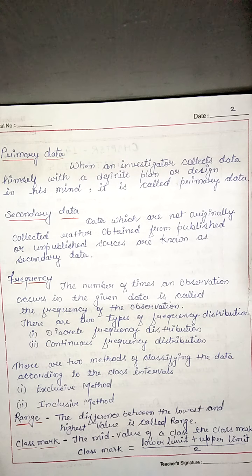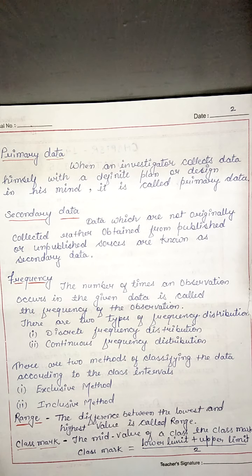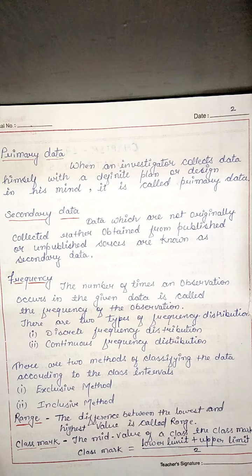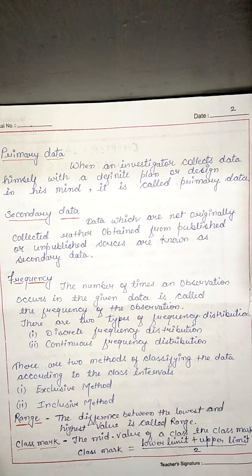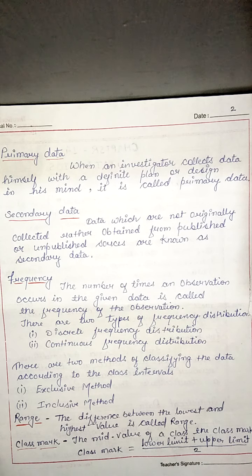Now we are talking about the presentation of data. The presentation of data means to represent and organize the collected data in its simplest form so we can easily analyze and interpret it. There are various ways to present the data: presenting in ascending or descending order, presenting data in the form of ungrouped frequency distribution, and presenting data in the form of grouped frequency distribution.